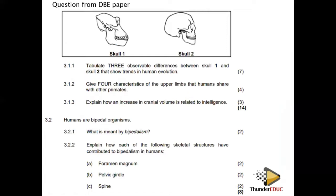Here are some exam questions. Number one: calculate the observable difference between skull one and skull two. Observable means what you can see. We can see brow ridges: in skull one they are more pronounced, while in skull two they are less pronounced or absent.